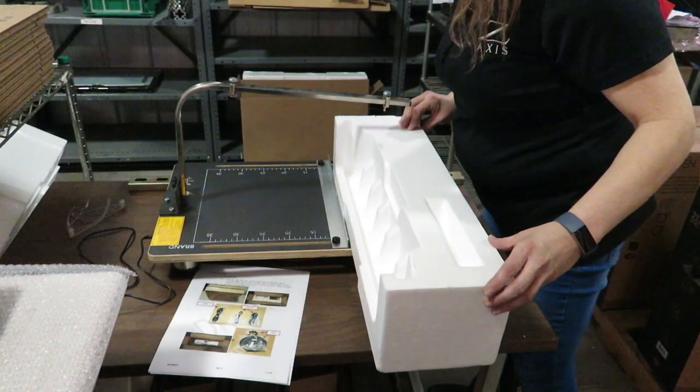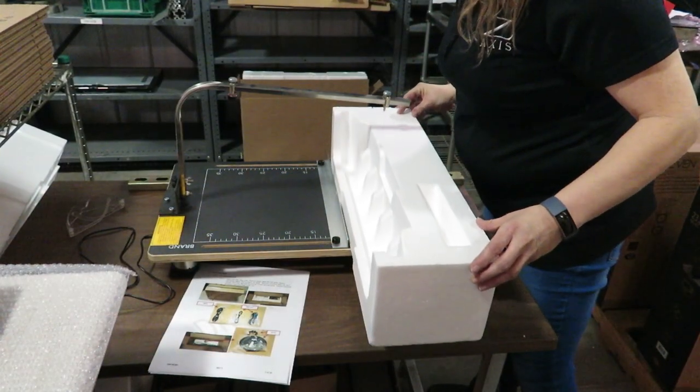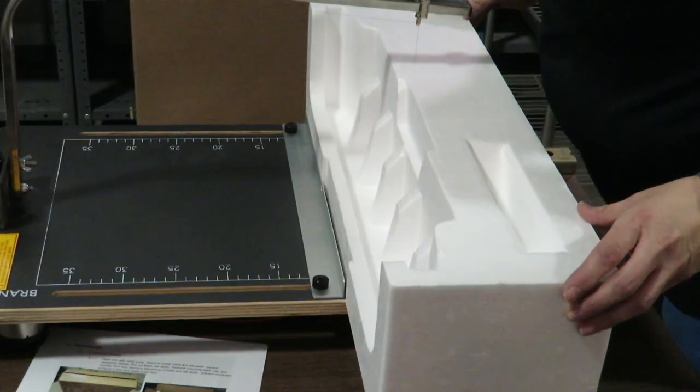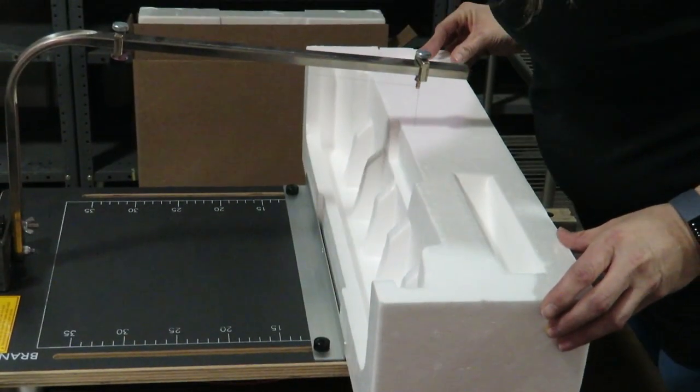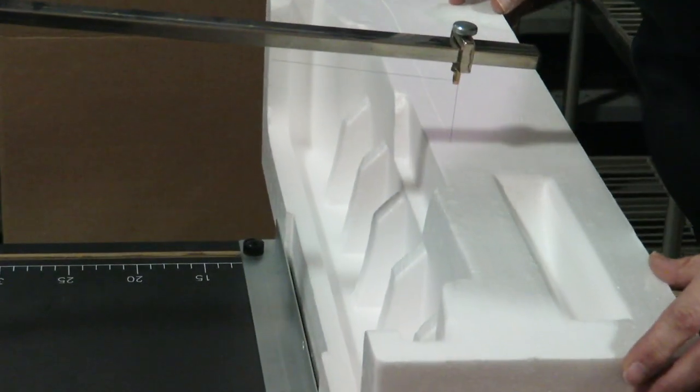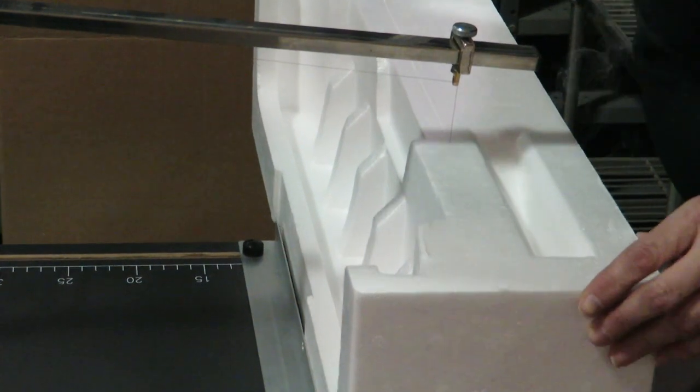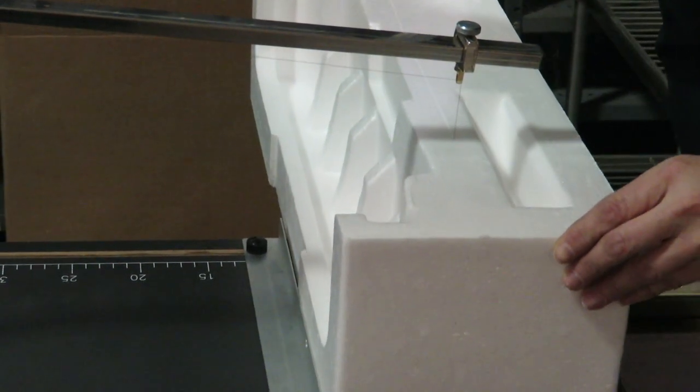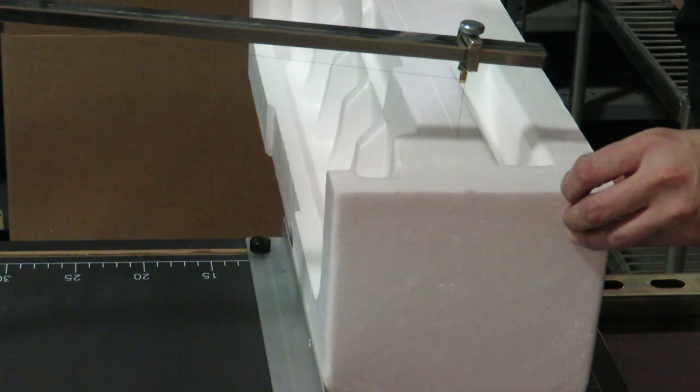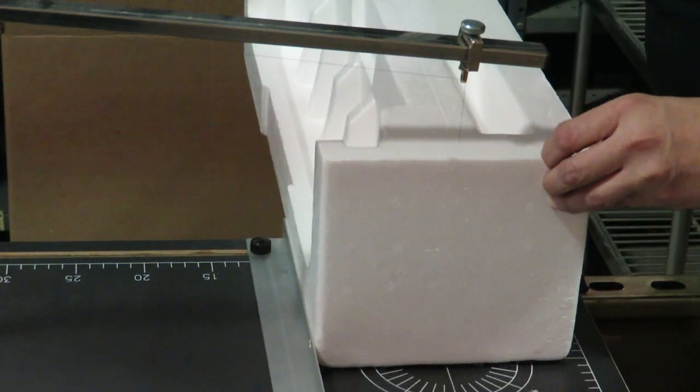Third, we focus on delivering whatever you need and finding unexpected ways to reduce costs or improve your results. For example, we use this hotwire cutter to reconfigure a customer's existing packaging to fit a new product. This lets them reduce shipping costs without having to scrap their old packaging and buy new.